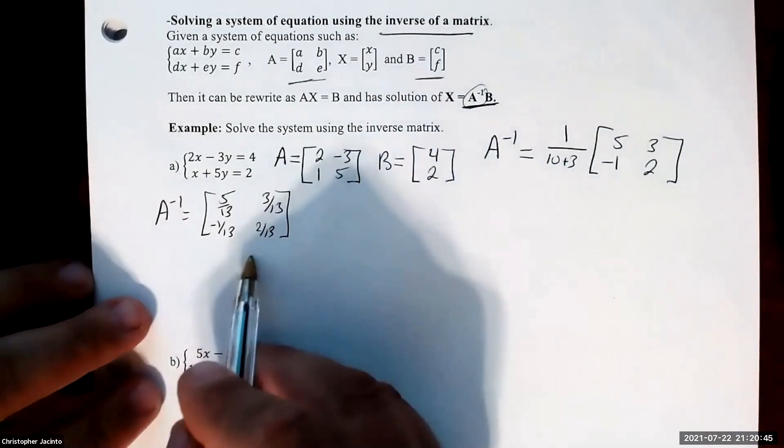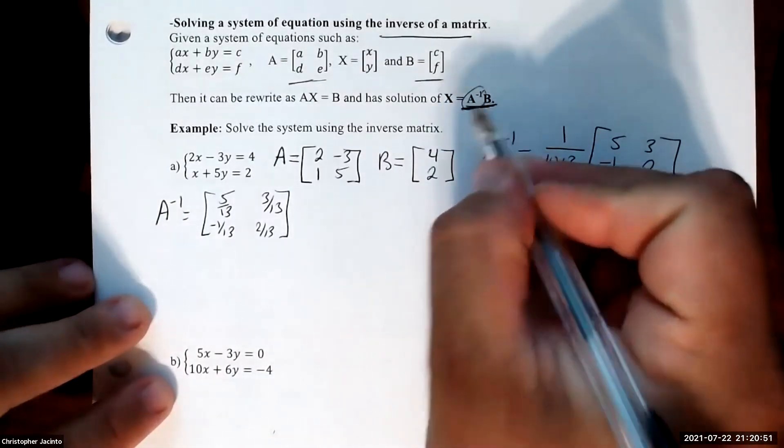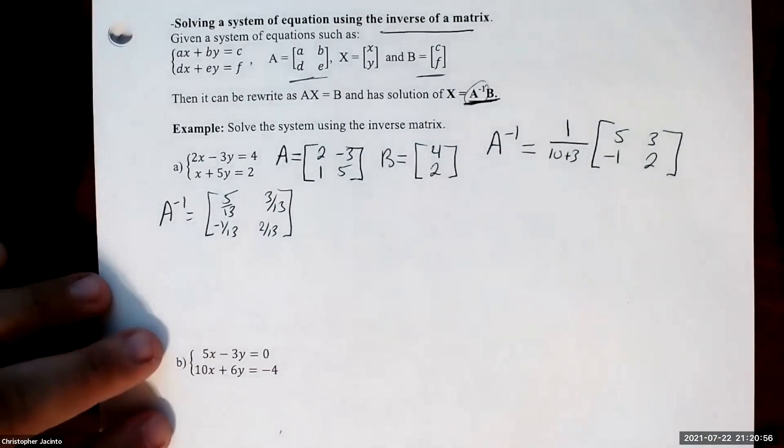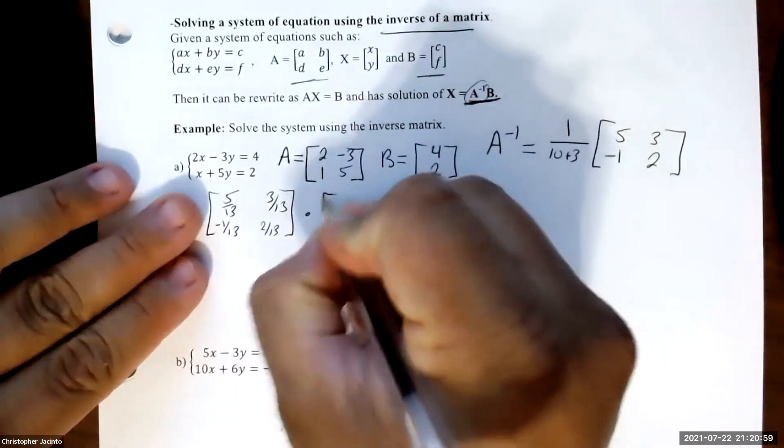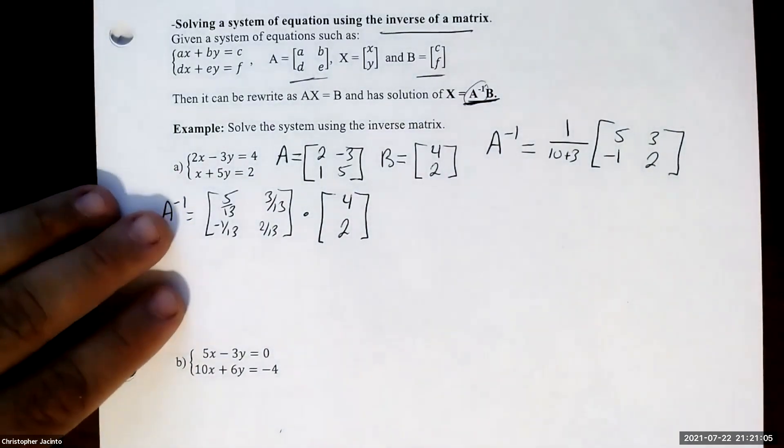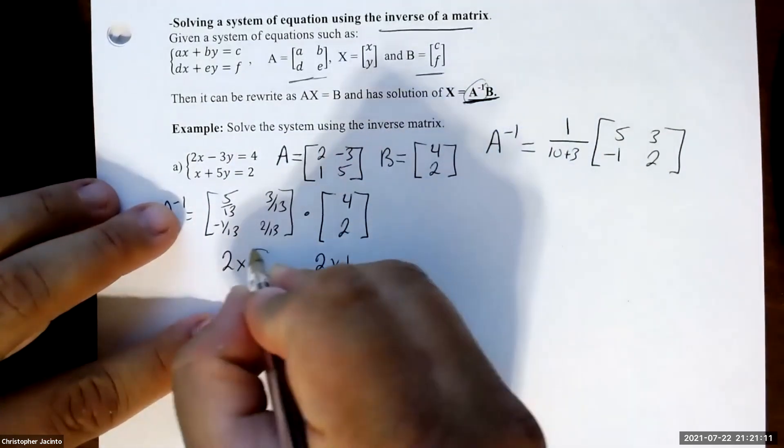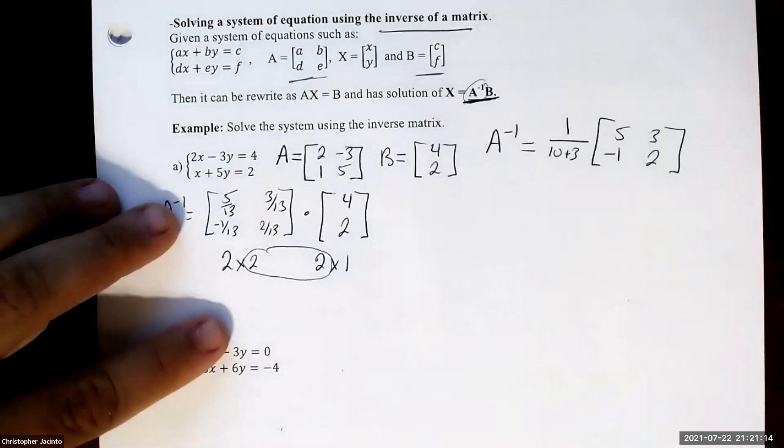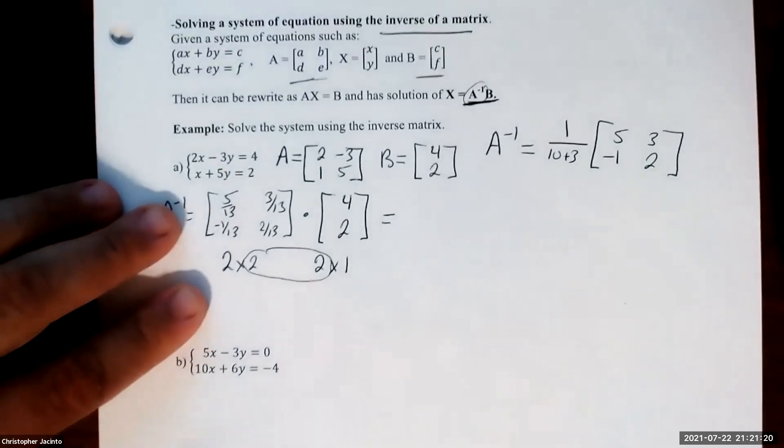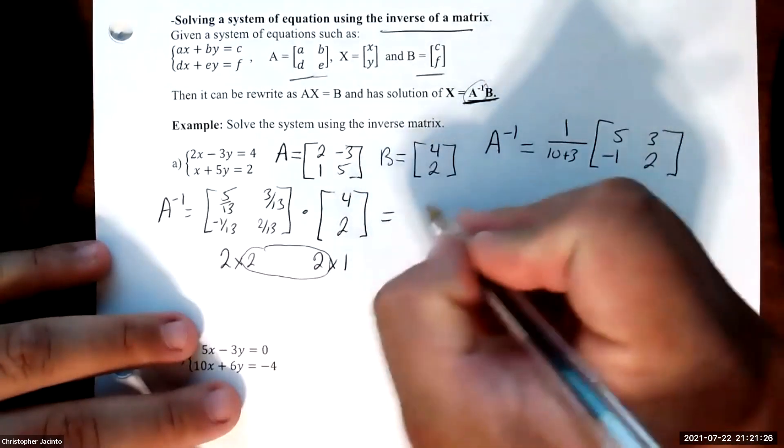Now that we have that, we're going to multiply this times that, in that order. Notice how it's written: A inverse times B. So it's this times that. You actually cannot do it the other way around. If you're wondering can we actually do this: well, this is 2 by 2, this is 2 by 1, so yes we can. The end result is going to be a 2 by 1 matrix.